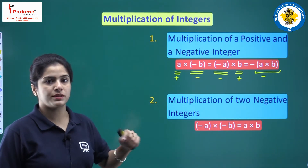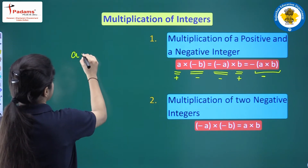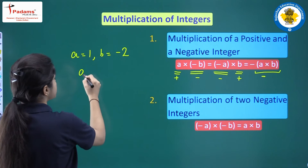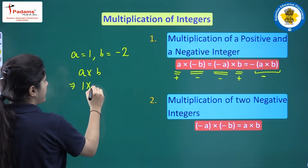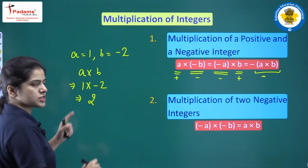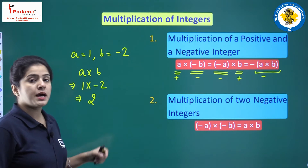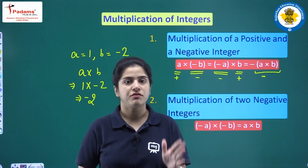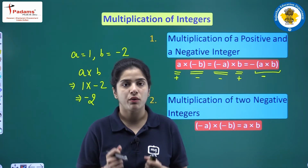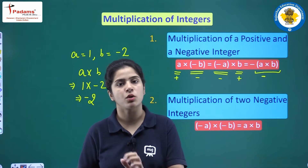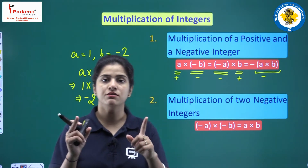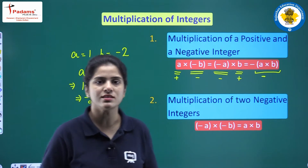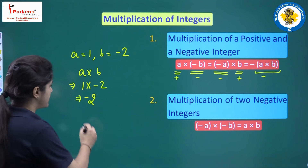Let's discuss this with an example. If A equals 1 and B equals –2, then 1 multiplied by –2: the numerical part gives 2, but the product will contain a negative sign. In the multiplication of integers, it does not matter whether the sign is on the left or right side, or on the larger or smaller number. If you have one negative and one positive in a multiplication, the product will always have a negative sign.